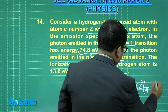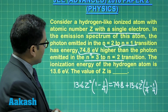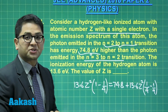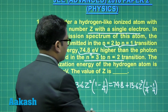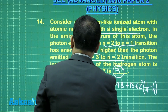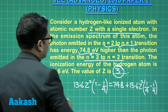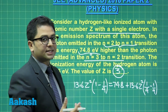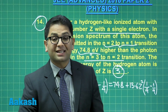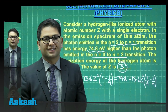Solving this equation, you get Z² equals 9, and the value of Z would be 3. So 3 is the correct answer for question number 14. With this we end the second section — now it's time to go to the third segment.